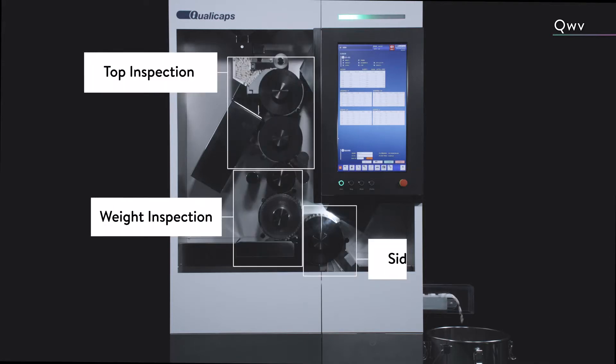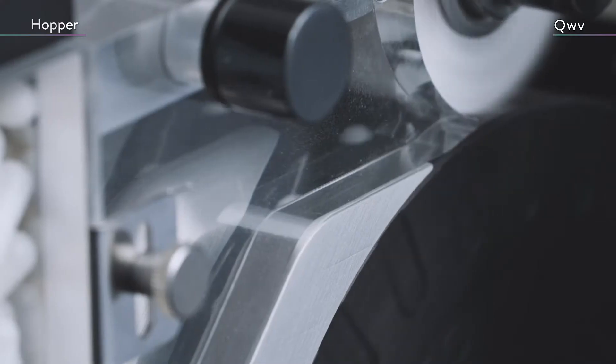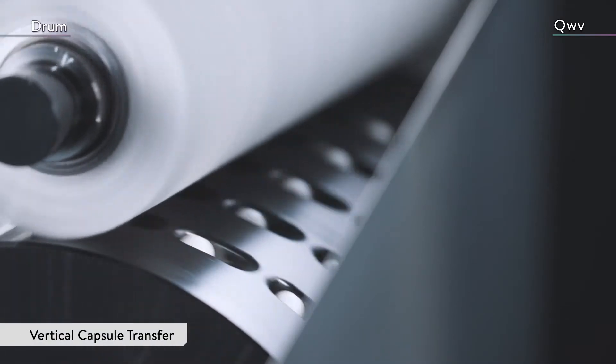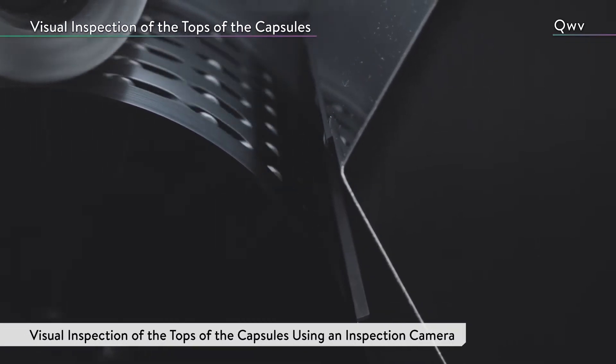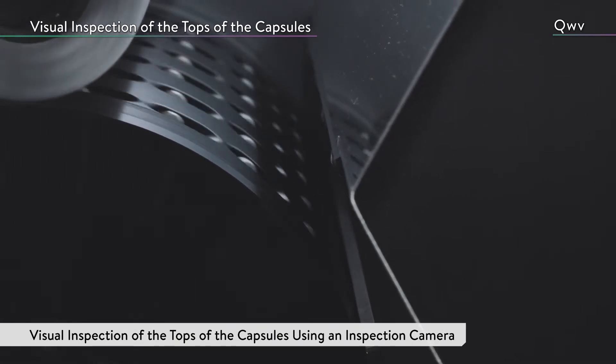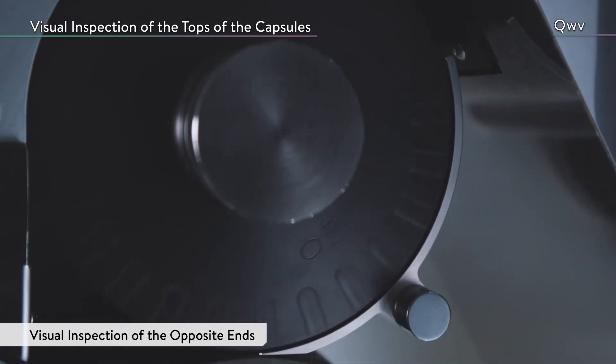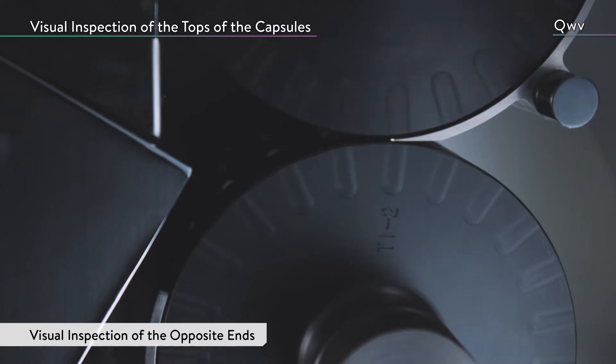Let's take an in-depth look at the inspection process. The capsules that are fed into the hopper pass through the service hopper into the first drum. The capsules are transported vertically on the drum, where the tops of the capsules are inspected using an inspection camera. Next, the capsules are transported to a second drum for the visual inspection of the opposite ends.